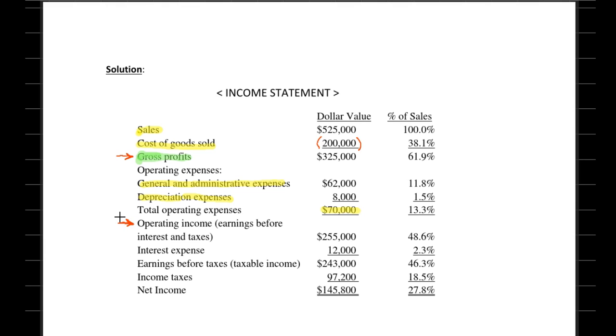Operating income—sometimes there's another term used which is earnings before interest and tax—that figure is basically the difference between gross profit minus total operating expenses, which is $70,000. So $325,000 minus $70,000 should provide us with $255,000. Now we are ready to deduct interest expense and taxes from this figure.